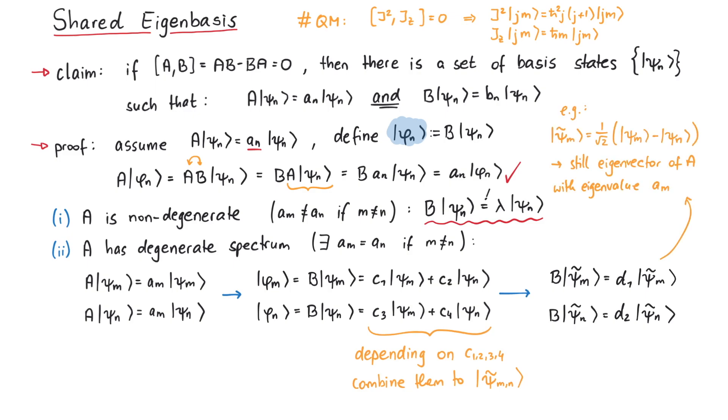Here comes the important part. Since the new psi_tilde functions are still eigenfunctions of A, and they are now also eigenfunctions of B, we completed the proof. Note that we considered the case of two degenerate eigenvalues for simplicity, but it works the same way for higher degeneracy.